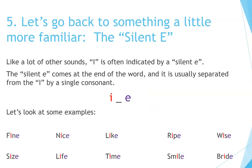Number five. Let's go back to something a little more familiar: the silent E. Like a lot of other sounds, I is often indicated by a silent E. The silent E comes at the end of the word and is usually separated from the I by a single consonant: I, silent E. For example: fine, nice, like, ripe, wise, size, life, time, smile, bride.